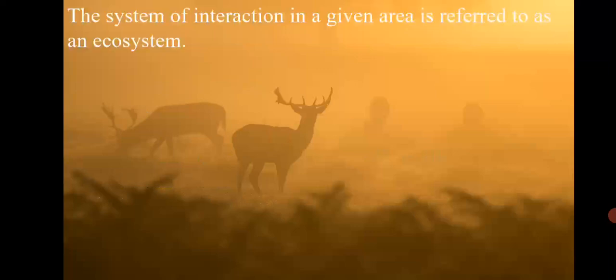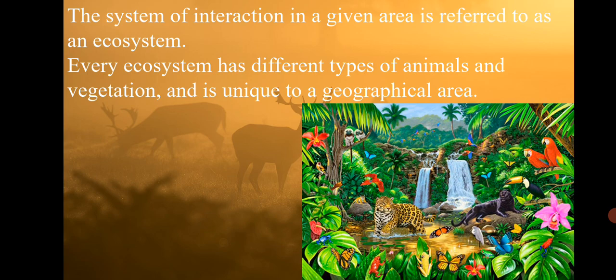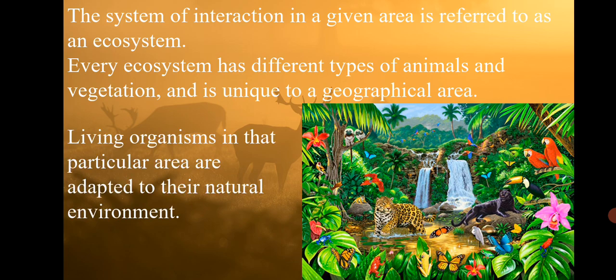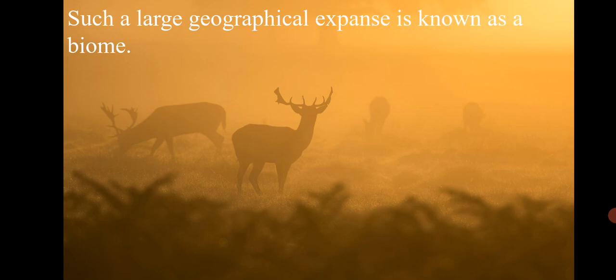A system of interaction in a given area is referred to as an ecosystem. Every ecosystem has different types of animals and vegetation, and is unique to a geographical area. Organisms living in that particular area are adapted to their natural environment.